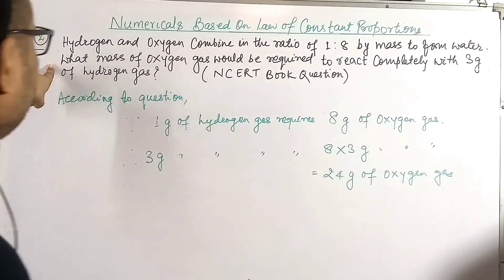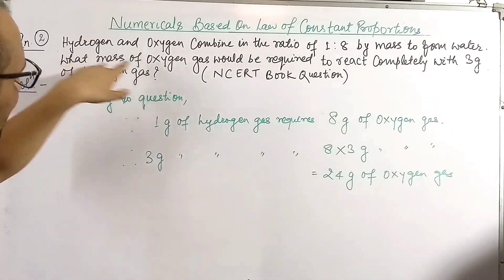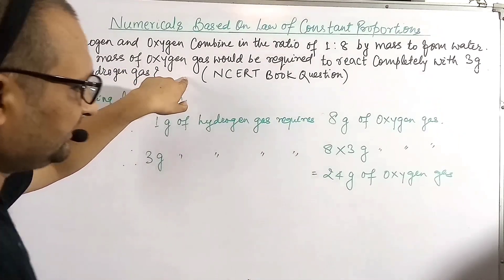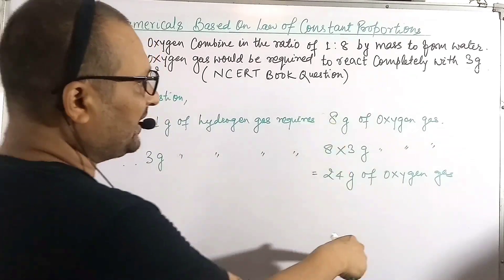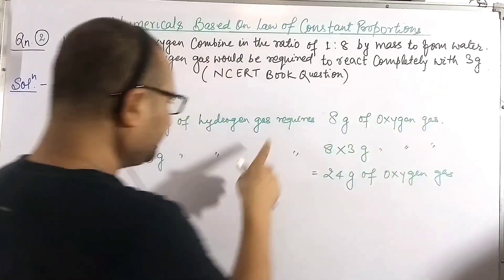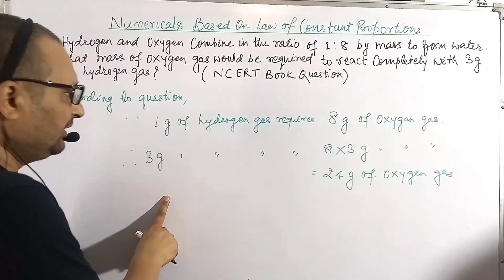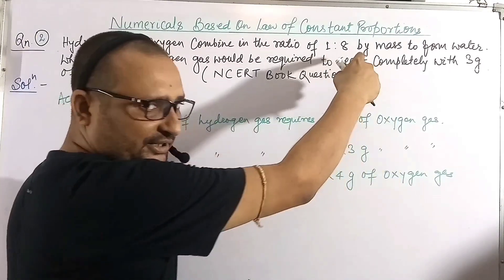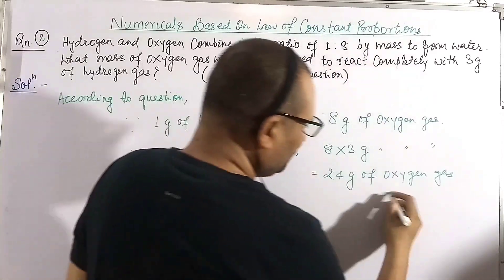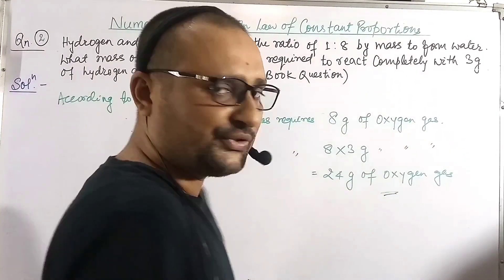So 24 gram of oxygen gas is required to react completely with 3 gram of hydrogen gas. This is the solution to question number two.